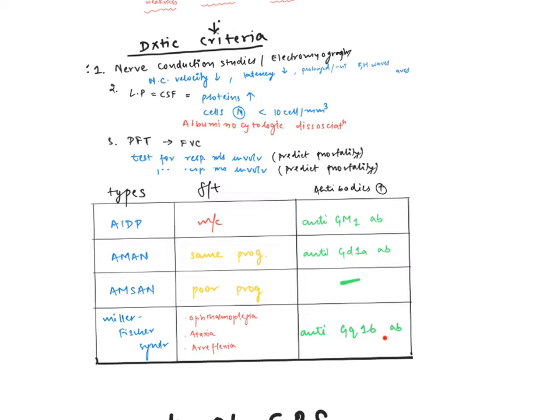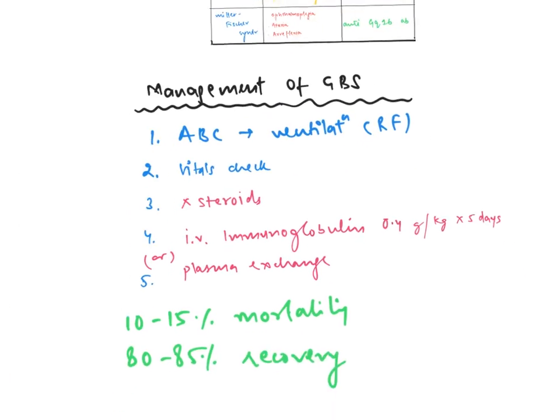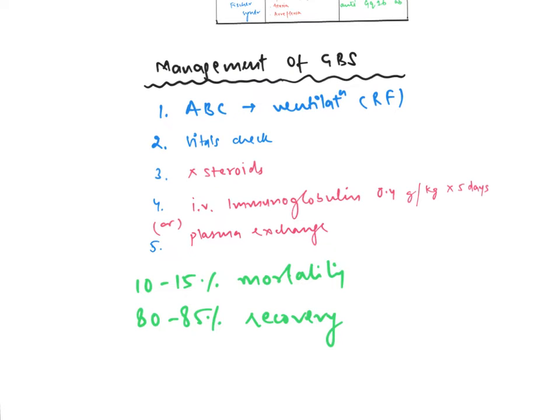Now we talk about management. For prof exam questions you have to write everything, but for PG you just need to know the exact treatment. For early management we check airway, breathing, circulation because there can be respiratory failure or impending respiratory failure. We have to put the patient on ventilation. We check vitals. Most important point is that steroids are not useful. Never give steroids - they have no role in GBS.